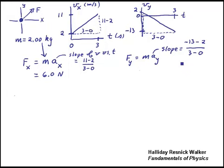I'm going to get a negative slope out of this. And, in fact, this ratio is giving me a negative 5 meters per second squared slope. Multiply by 2, and I get F sub Y, and it's negative 10.